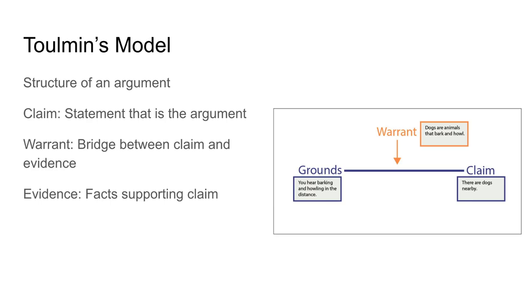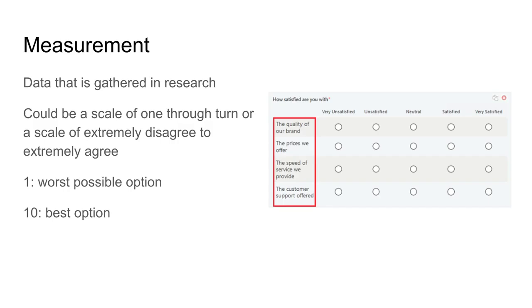Another thing I learned about in this class was the Toulmin's model. It's a structure of an argument. First, we have a claim, which is the statement that is the argument — in the picture, the claim is there are dogs nearby. And how do we know? We use evidence: we can hear dogs barking and howling in the distance. The warrant is the bridge between the two — it's your reasoning. Dogs are animals that bark and howl, which bridges the claim and the evidence.